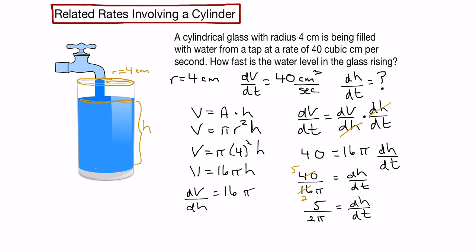And if we take pi to be 3.14 and plug it into our calculator, we end up with approximately 0.8, and this would be centimeters per second is our change in height with respect to time.